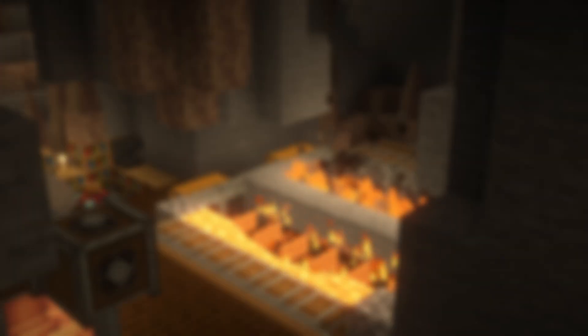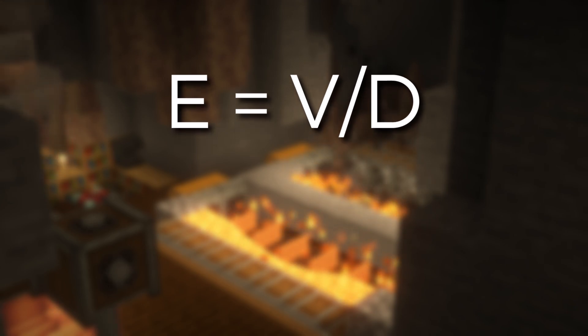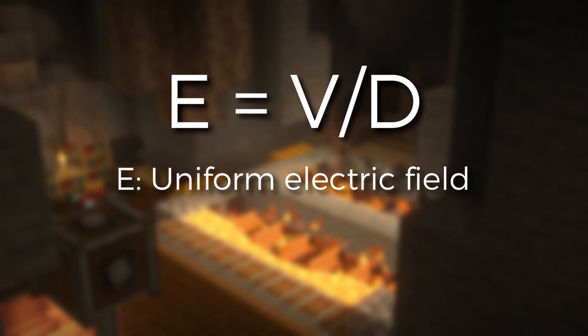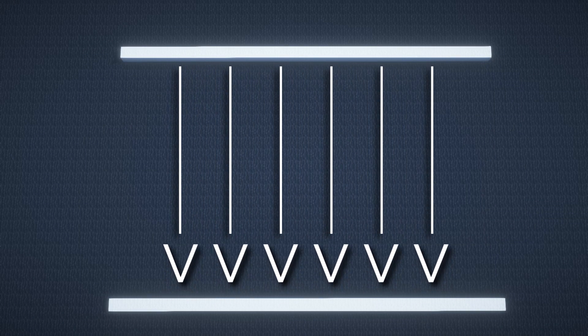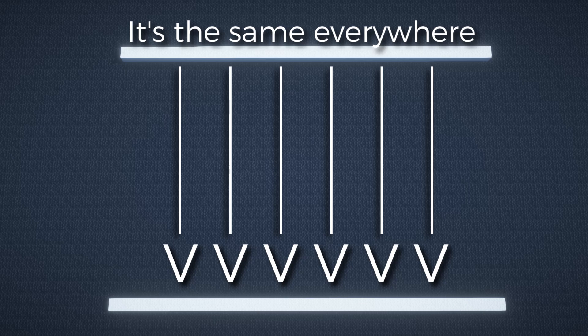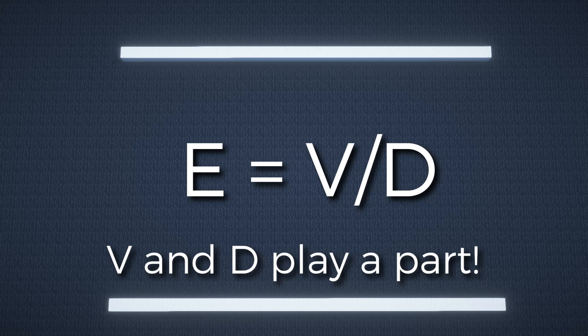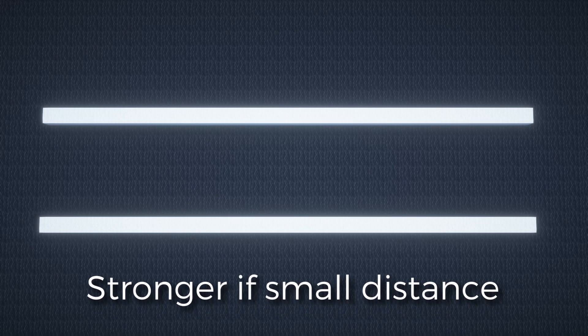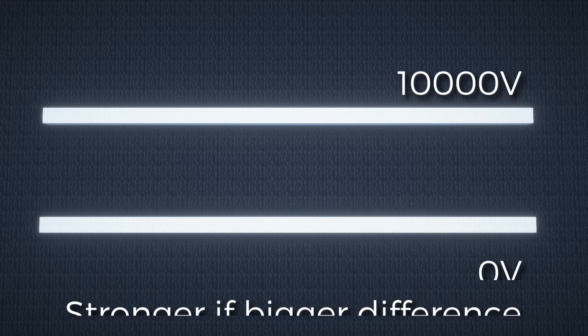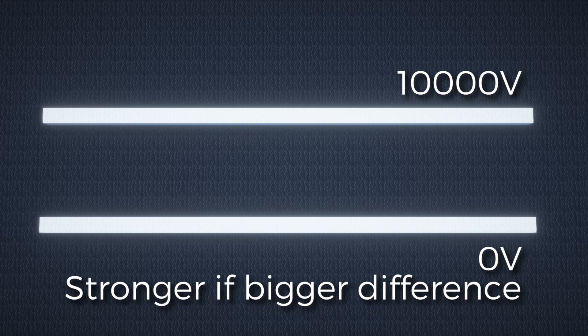Now let's move on to another equation found on the equation sheet: E equals V divided by d. This refers to a uniform electric field where the field strength is the same everywhere, both in magnitude and direction. The field lines are all facing the same way, towards the negative side. We can see from the equation that the distance of the sources and the potential difference between them both play a part in determining how strong the electric field is. If the distance is small, the electric field is stronger, and if the potential difference is bigger, the electric field is stronger.